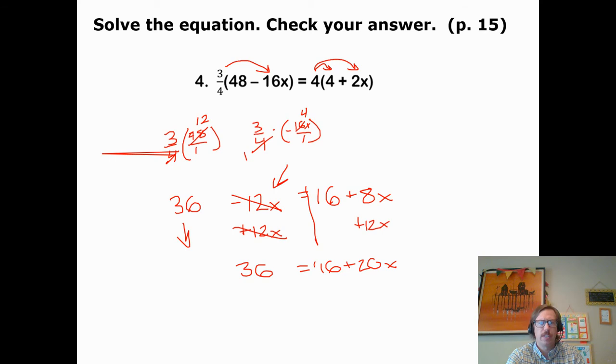From there, I'm going to bring down what's left. I've only got 36 now equals 16 plus 20x. From here, I need to move my whole numbers. So how do I move this 16? Well, I do the opposite. It's a positive, so I'm going to subtract 16 and get 20 is equal to 20x. To solve from there, I need to divide. I would divide both sides by 20 and get that x is just 1, the loneliest number.